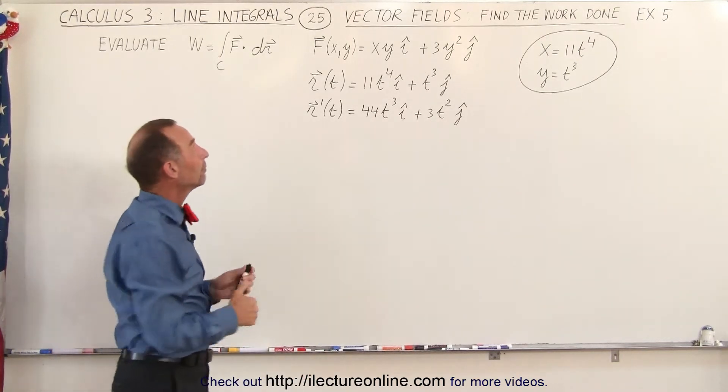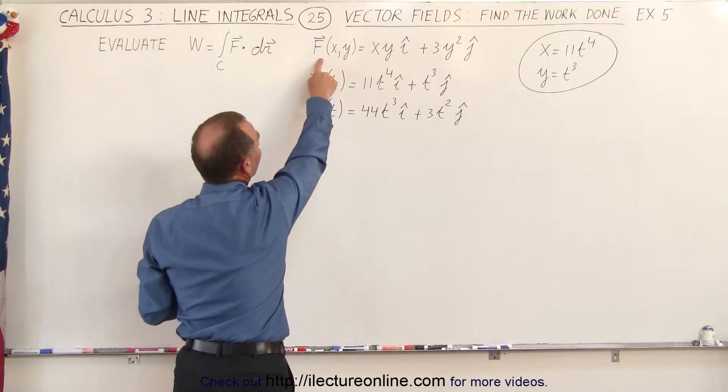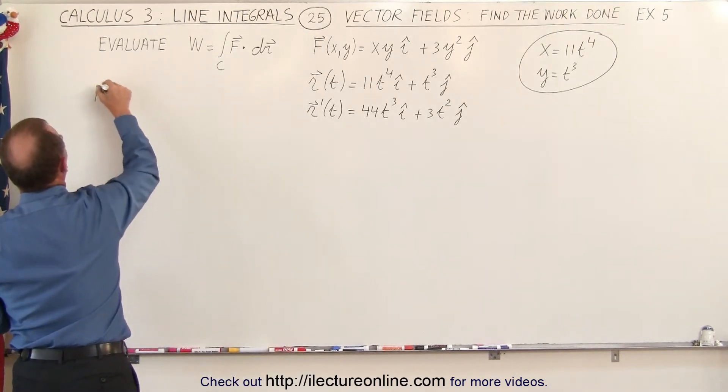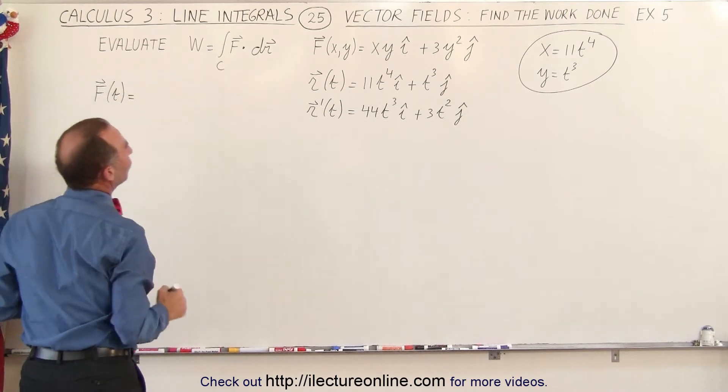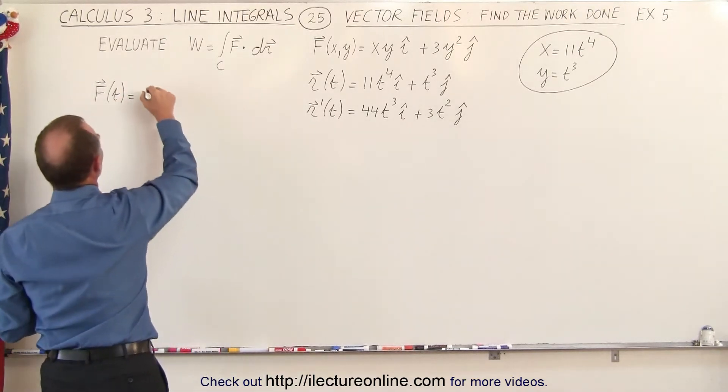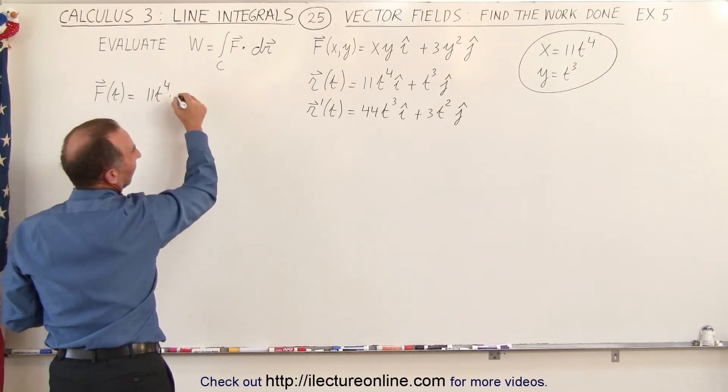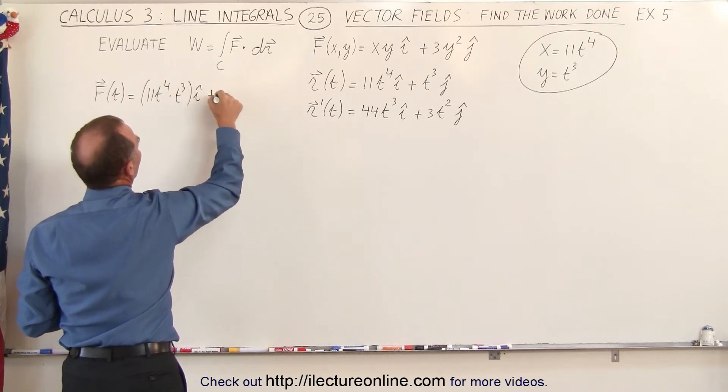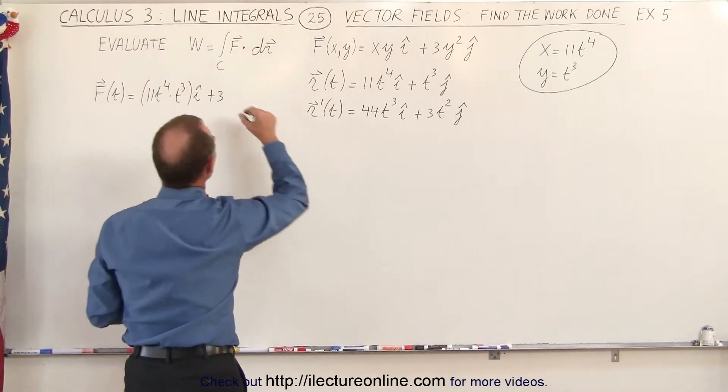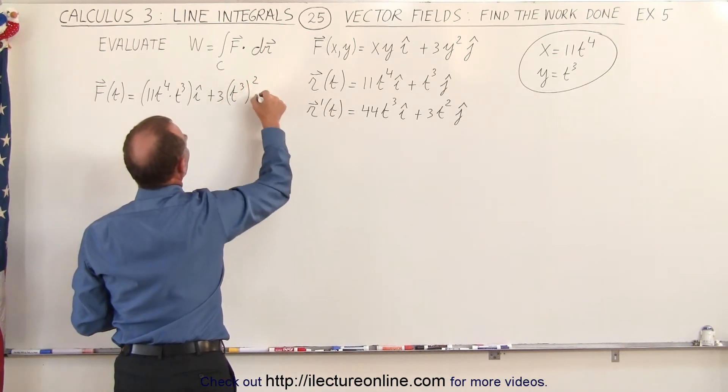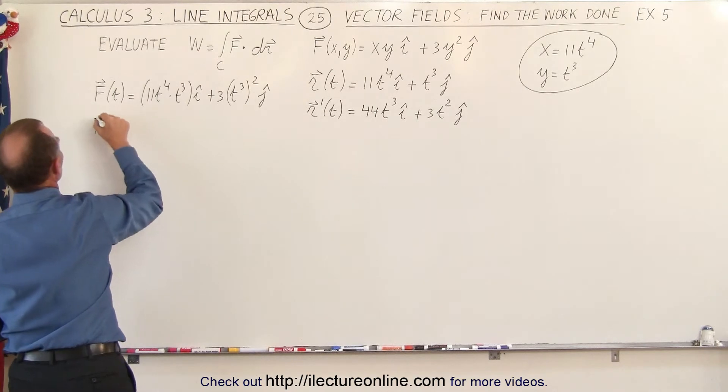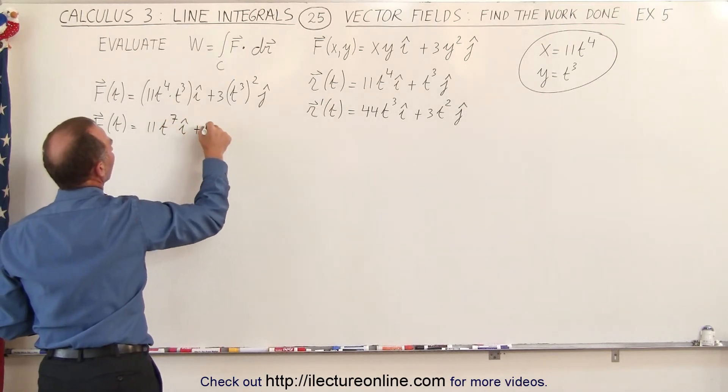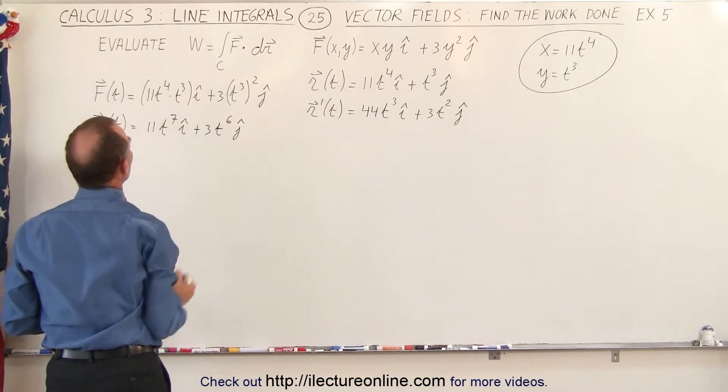Now we still need to reconvert our force field, or our vector field, in terms of the parameter t. So let's make that substitution. So f written in terms of t is going to be equal to x times y. So it would be 11t to the 4th times t cubed in the i direction, plus 3y squared. That would be t cubed quantity squared in the j direction. So this looks as follows, f in the function of t is equal to 11t to the 7th in the i direction, plus 3t to the 6th in the j direction.